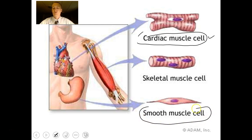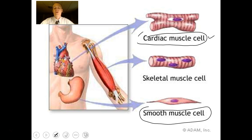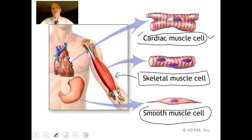There's smooth muscle tissue, which surrounds digestive organs, the iris of your eye, blood vessels, and the uterus — and it's involuntary. Today what we're going to focus on mainly is skeletal muscle tissue, found attached to exoskeletons of insects or endoskeletons like yours attached to bones. This is voluntary, and we're going to talk about its anatomy and how it actually works.